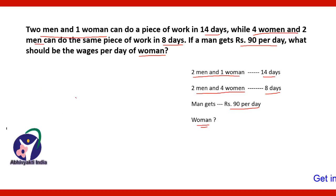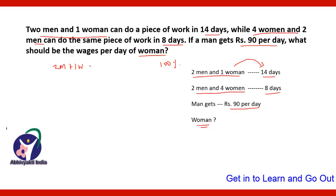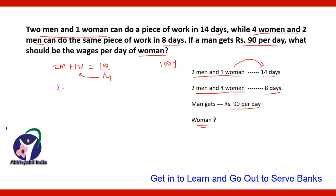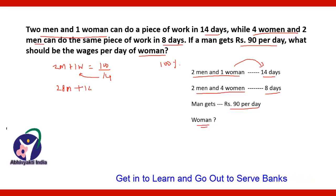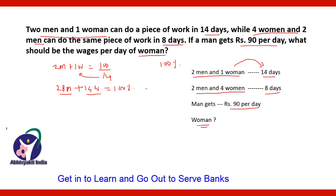2 men and 1 woman work together and finish the work in 14 days. Taking total work as 100%, in 1 day they finish 100/14% of the work. Multiplying both sides by 14 gives 28 men + 14 women = 100% work, meaning 28 men and 14 women will finish 100% work in 1 day.